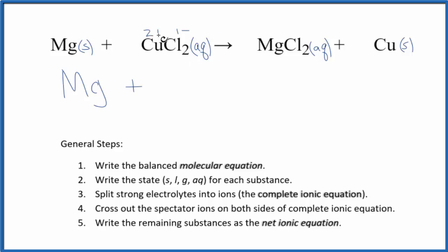So copper has to be 2 plus. We can't normally tell because it's a transition metal. We have to look at what it's bonded to. So we have the copper 2 ion, Cu2+, and then we have the chloride ion, Cl-. But this 2 means we have 2 of these chloride ions.